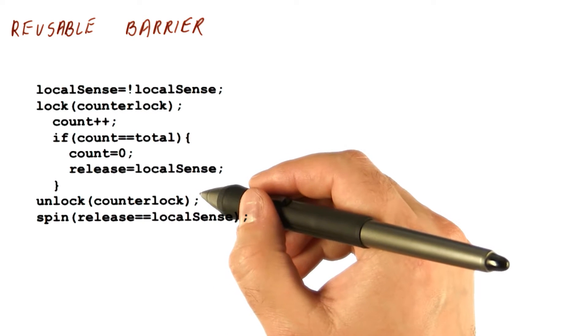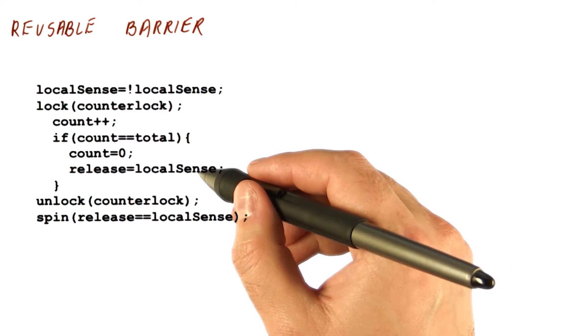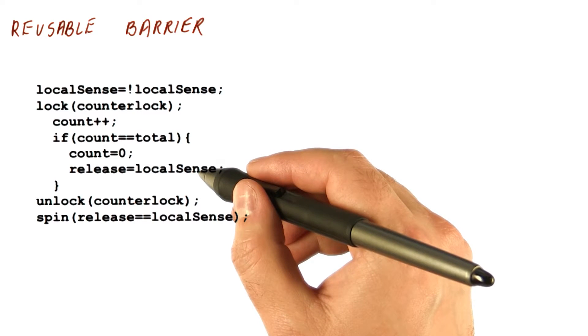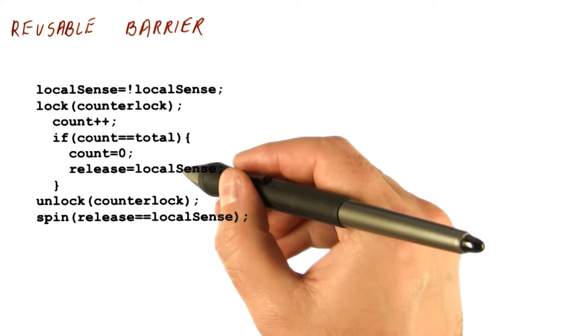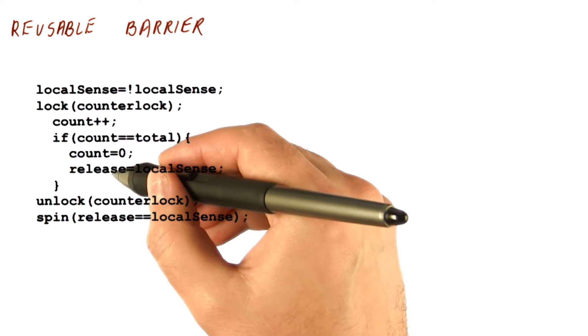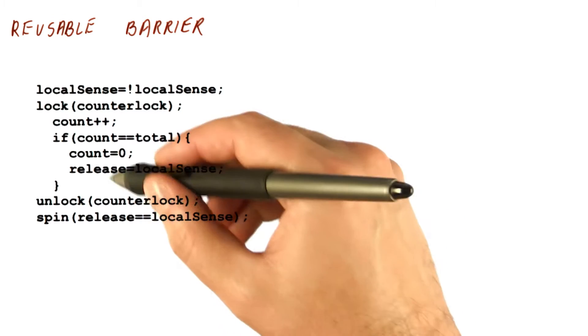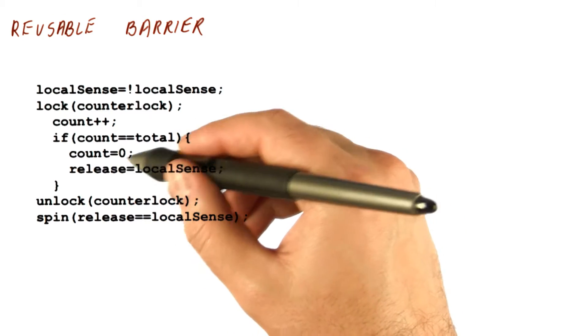The idea here is that the value for releasing the barrier will not be the same for all instances of the barrier. Even instances when release becomes zero, all the instances are going to release when release becomes one. So the idea is that we never really need to reinitialize the release. We just flip the release.